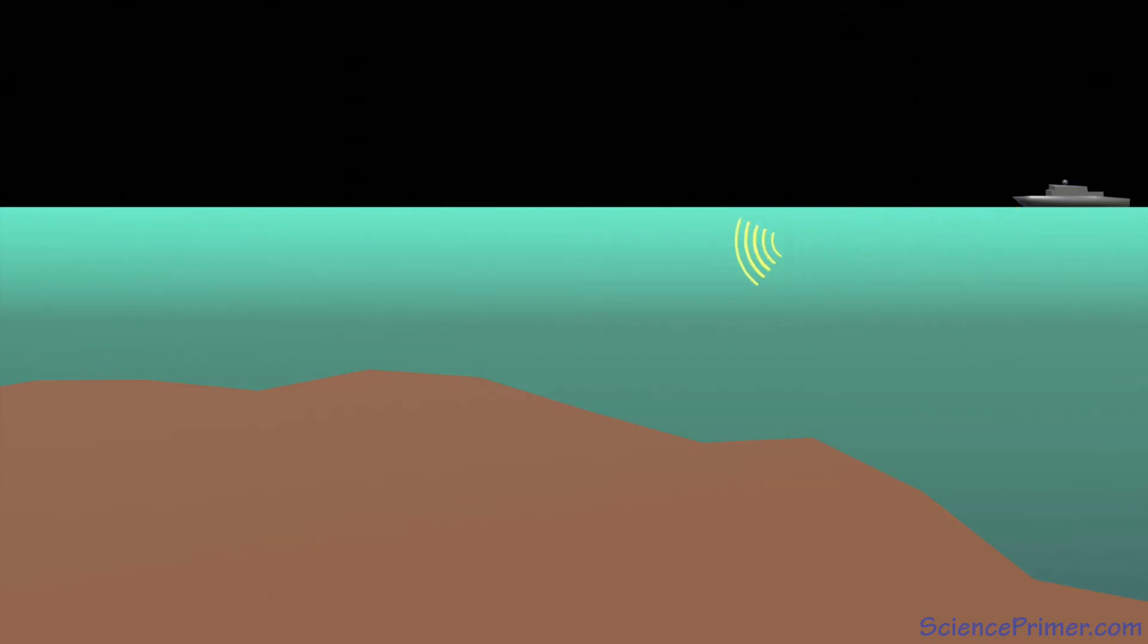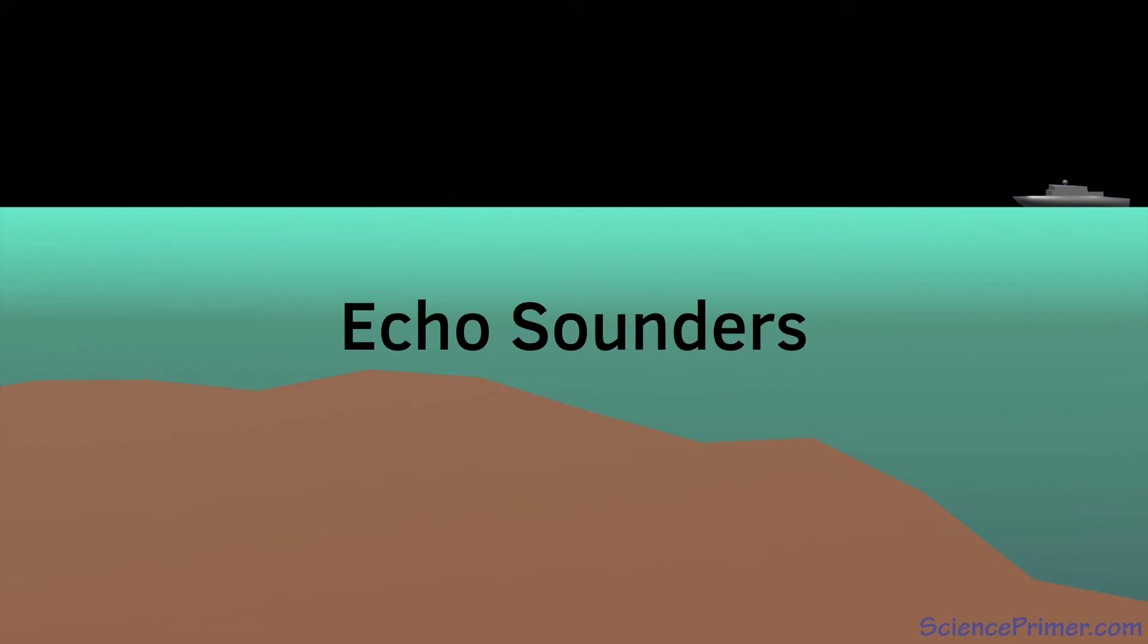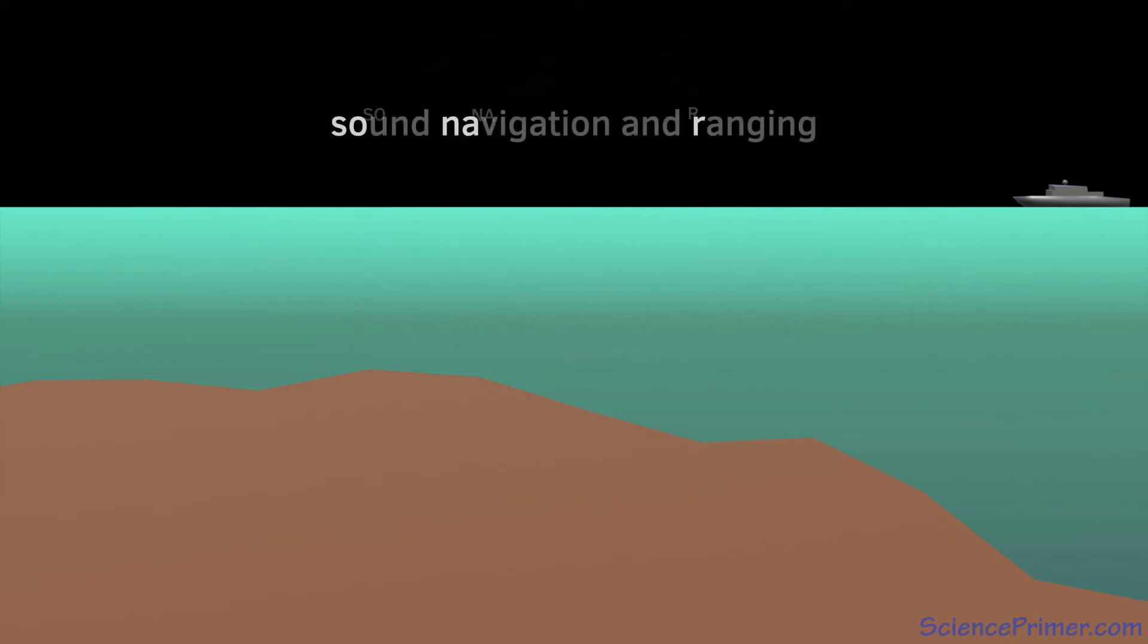Sound, on the other hand, can travel long distances underwater, a fact known since at least Leonardo da Vinci's time in the 15th century. Echo sounders are a type of sonar, which stands for sound, navigation, and ranging. Echo sounders use transducers to generate and receive acoustic signals. Measuring the time taken for a sound wave to return from a reflected surface allows ships to estimate the distance to that reflecting surface.